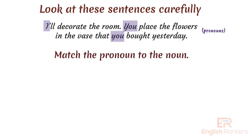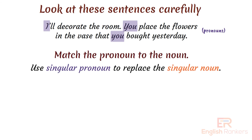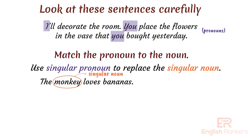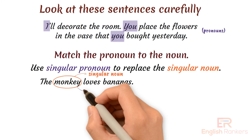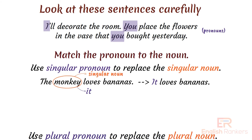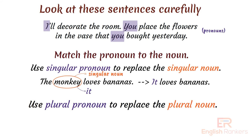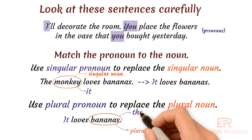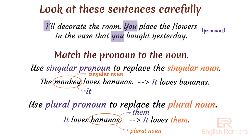Match the pronoun to the noun. Use a singular pronoun to replace a singular noun. For example: 'The monkey loves bananas.' To replace 'monkey', which is singular, we use the singular pronoun 'it', so the sentence becomes 'It loves bananas.' Use a plural pronoun to replace a plural noun. 'Bananas' is plural, so we replace it with 'them', making the sentence 'It loves them'.